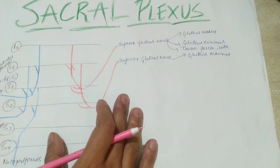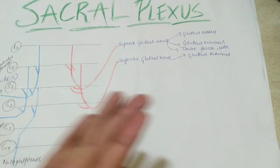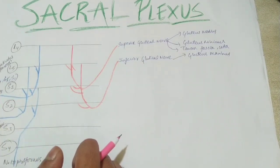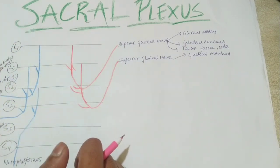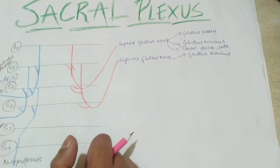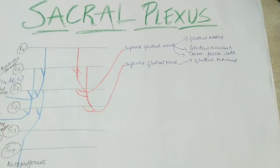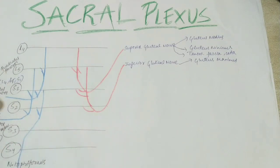These nerves leave the pelvis through the greater sciatic foramen, passing above the piriformis muscle to supply these muscles. As a general topography, all nerves from the sacral plexus leave through the greater sciatic foramen, except the pudendal nerve which exits through the greater sciatic foramen and re-enters through the lesser sciatic foramen, reaching the perineum via the ischio-rectal fossa.